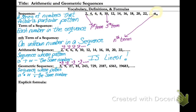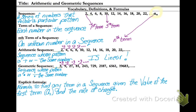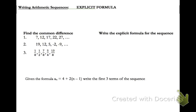Another term you're going to need is explicit formula. An explicit formula is a formula to find any term in a sequence, given the value of the first term and whatever the rate of change is, whether it's a common difference or a common ratio. Now let's look at arithmetic sequences. The explicit formula for an arithmetic sequence is: a sub n equals a sub 1 plus d times the quantity n minus 1.